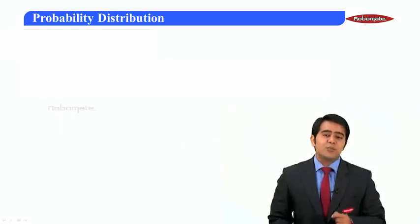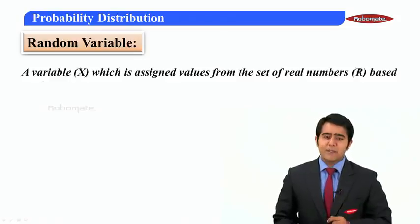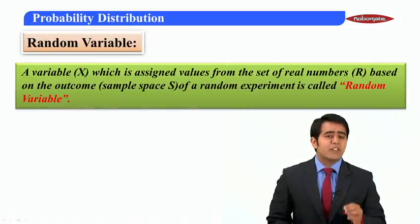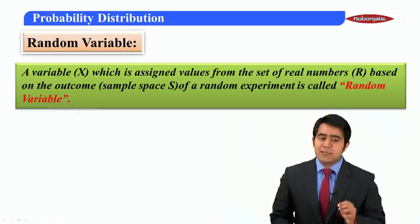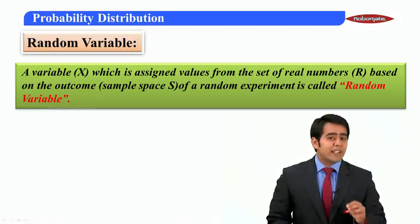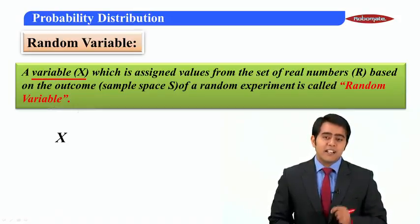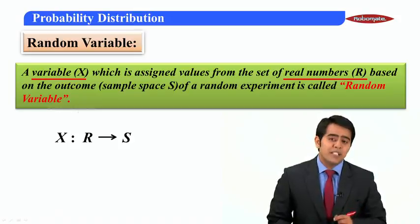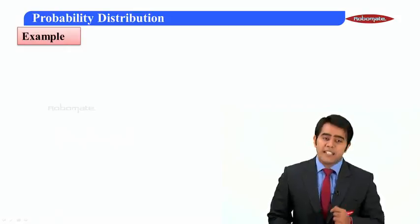Let us learn about random variable. A variable x which is assigned values from the set of real numbers based on the outcome of the sample space of a random experiment is called a random variable. Variable x is nothing but the values assigned from the set of real numbers to the sample space S.